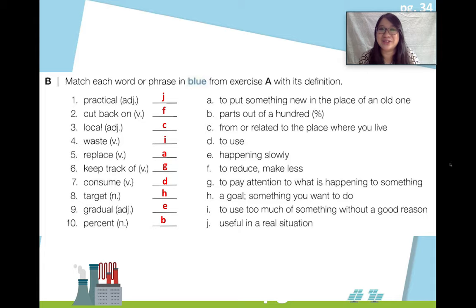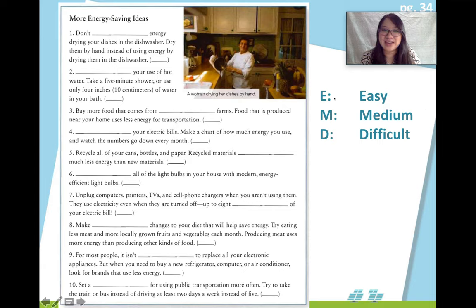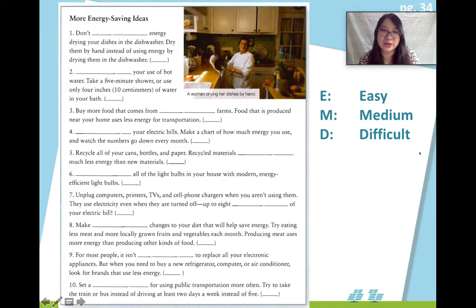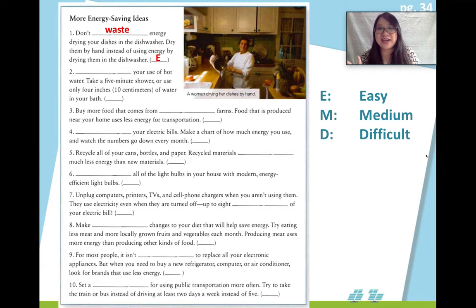Hopefully you got all of the correct answers. Now we have a fill-in-the-blank. There are two parts: number one, you must put the vocabulary, and number two, you must add E, M, or D — read the sentence and then decide if this energy-saving idea sounds easy, medium, or difficult to do in your life. Think about your situation — it might be easy for someone else and difficult for you, so don't be shy. Answer honestly according to your life. For example: don't waste energy by drying your dishes in the dishwasher — dry them by hand instead. I don't have a dishwasher, so this is really easy. Go ahead and finish the rest of these questions by yourself, and when we come back, we'll check the vocabulary words.